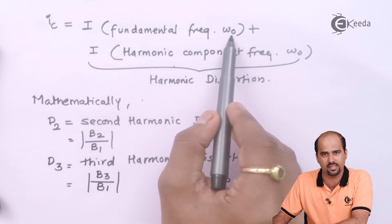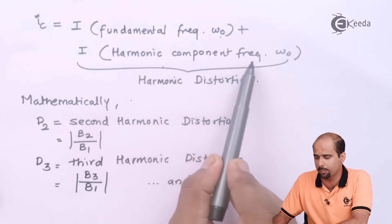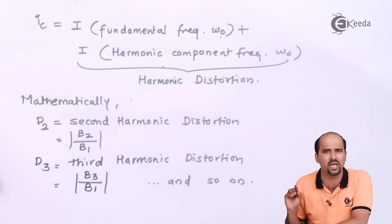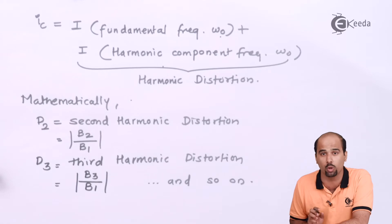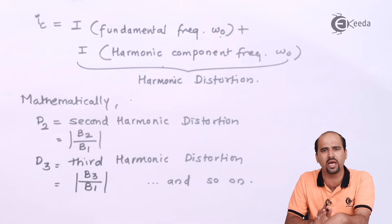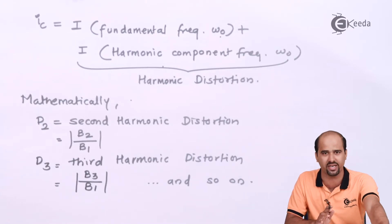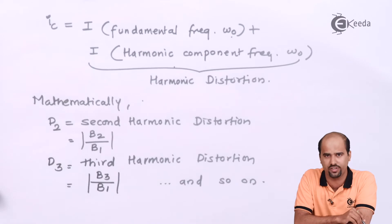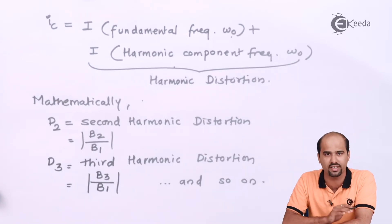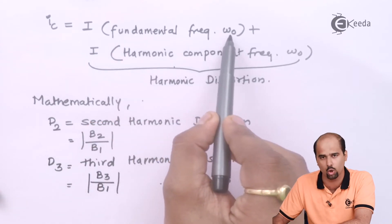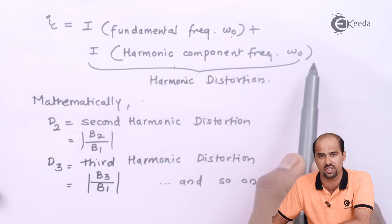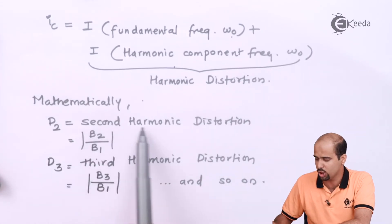The signal at frequency ω₀ is the fundamental frequency. All harmonic components of ω₀ — that is 2ω₀, 3ω₀, 4ω₀, 5ω₀ up to nω₀ — are nothing but harmonics. I don't want those harmonics, so first I have to learn how to calculate them. For ω₀ it is the fundamental; when talking about harmonics, they are components at 2ω₀, 3ω₀, and nω₀. The second harmonic distortion D2 = B2/B1, and the third harmonic distortion D3 = B3/B1.